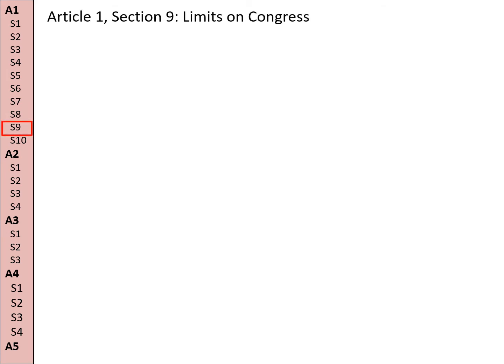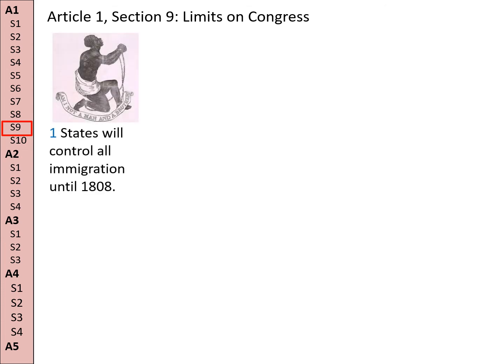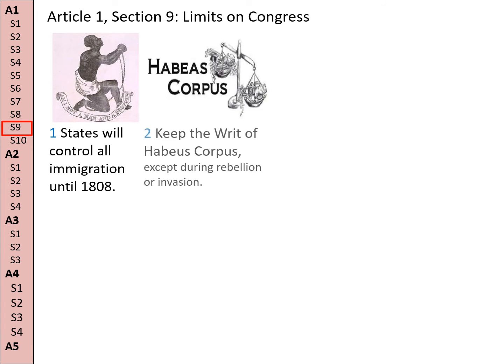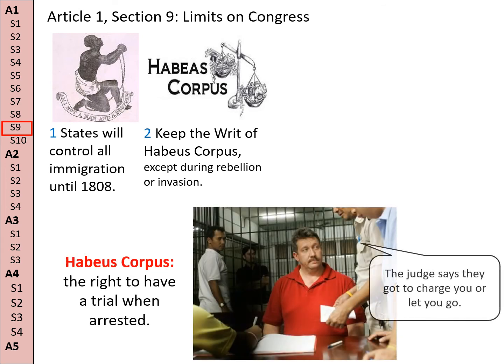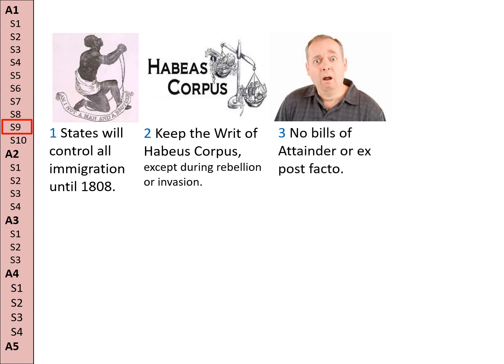Section 9: The limits the Constitution puts on Congress. Limitation one: the states will get to control all the immigration until 1808. Limitation two: they must keep the writ of habeas corpus except during rebellion or invasion — they can't just throw you in jail and leave you there. Limitation three: Congress cannot pass bills of attainder or declare somebody guilty, nor shall they pass laws of ex post facto, making something illegal before the law was passed.